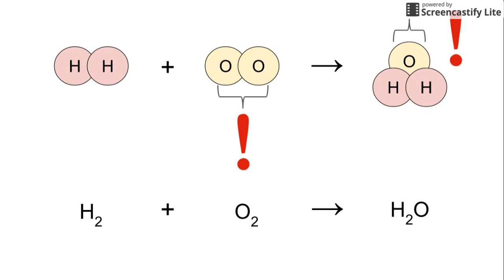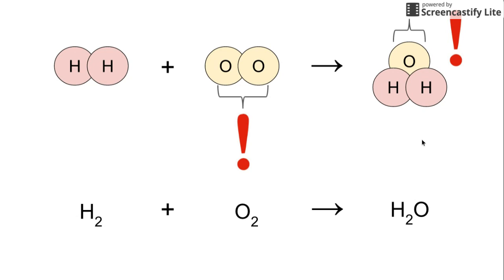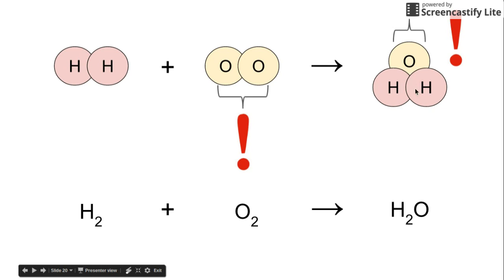Here is the key rule: we can only add in whole molecules. If this is on the product side, we simply cannot add another oxygen atom on its own. The only way we're able to add in atoms is as they appear as molecules in the equation. So in this case, the only way to get more oxygen on the product side is by adding in another molecule of H₂O. We can only use the particles that exist in the chemical equation.